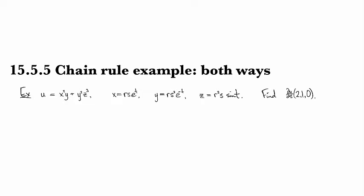So I've got some reasonably hairy example here. So u is a function of x, y, and z: x to the fourth y plus y squared z cubed. And then each of these variables in turn depends on three others. So x is a function of r, s, and t given by rs times e to the t, y is equal to rs squared e to the minus t, and z is equal to r squared s times sine of t.